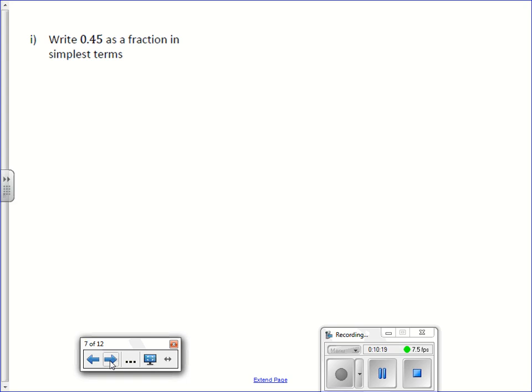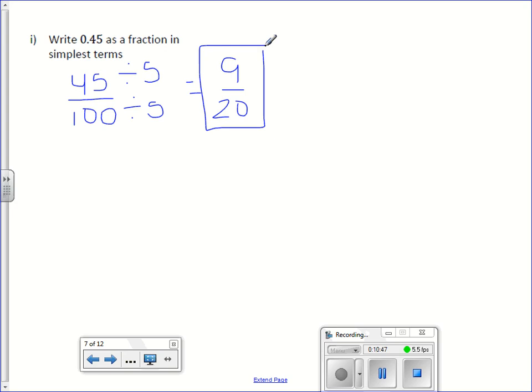Now let's go the other way. We're going to take decimals and write them as fractions or mixed numbers. So we have 0.45. The proper way to say that is 45 hundredths. So quite simply, it would be 45 hundredths, 45 over 100. All we need to do here is reduce or simplify. So divide by 5: 9 over 20.